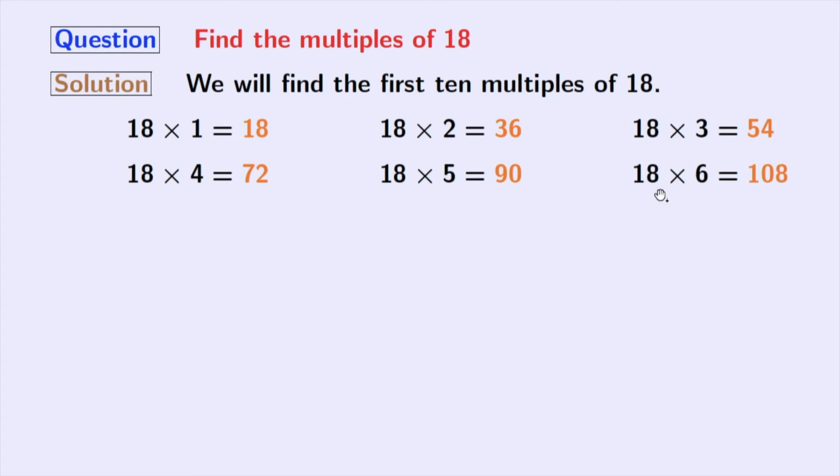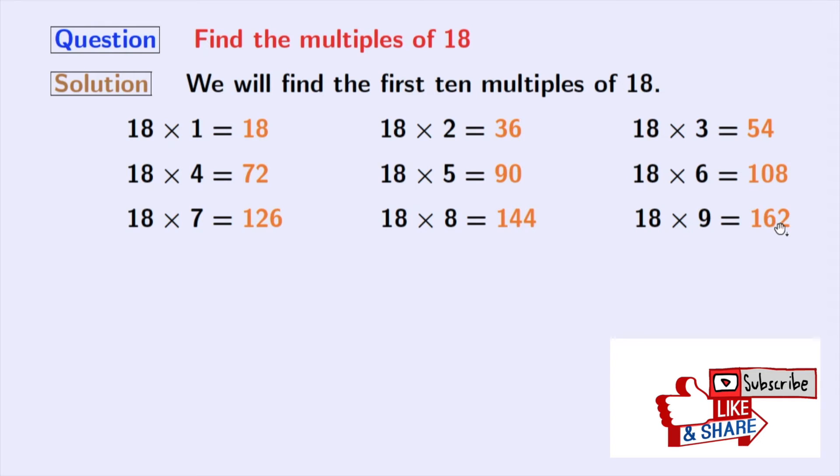Multiplication of 18 and 6 gives us 108. Multiplying 18 with 7, we get 126. Multiplying 18 with 8, we get 144. If we multiply 18 with 9, we get 162. And if we multiply 18 with 10, we get 180.